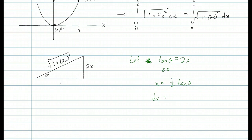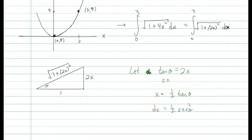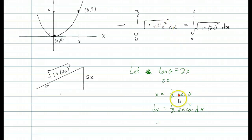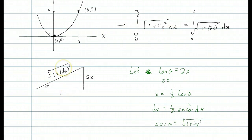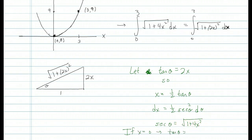Then we get the derivative: dx equals one-half secant squared theta d theta. Now looking at our integrand, it involves the square root, which comes off our hypotenuse. Secant is hypotenuse over adjacent, so secant theta equals the square root of 1 plus 4x squared.